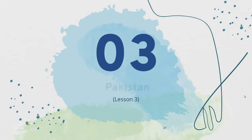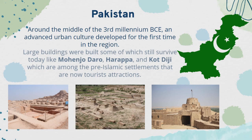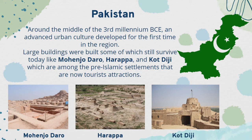Lesson 3: Pakistan. Around the middle of the 3rd millennium BCE, an advanced urban culture developed for the first time in the region. Large buildings were built, some of which still survive today — like Mohenjo-daro, Harappa, and Kot Diji — which are among the pre-Islamic settlements that are now tourist attractions.